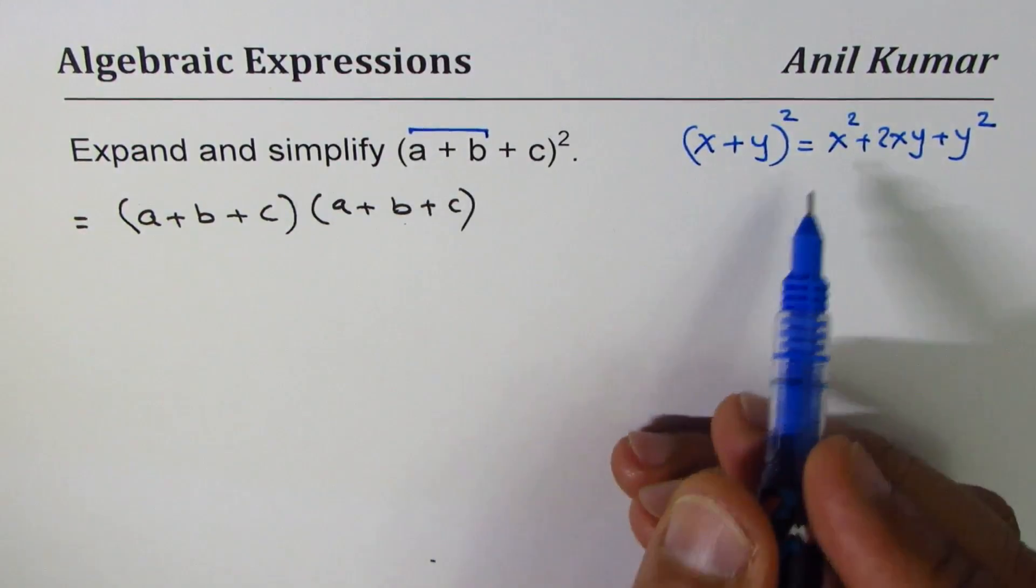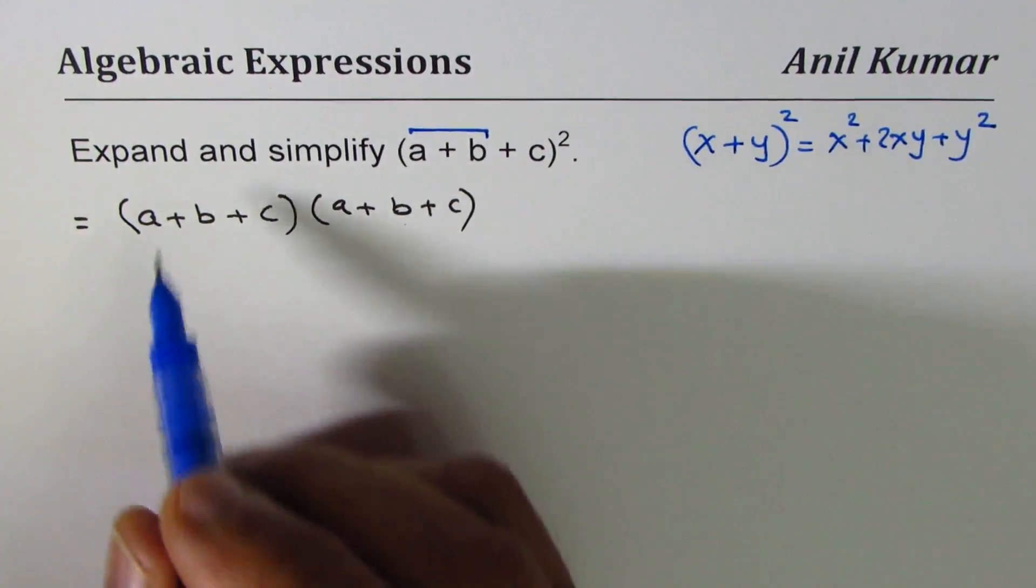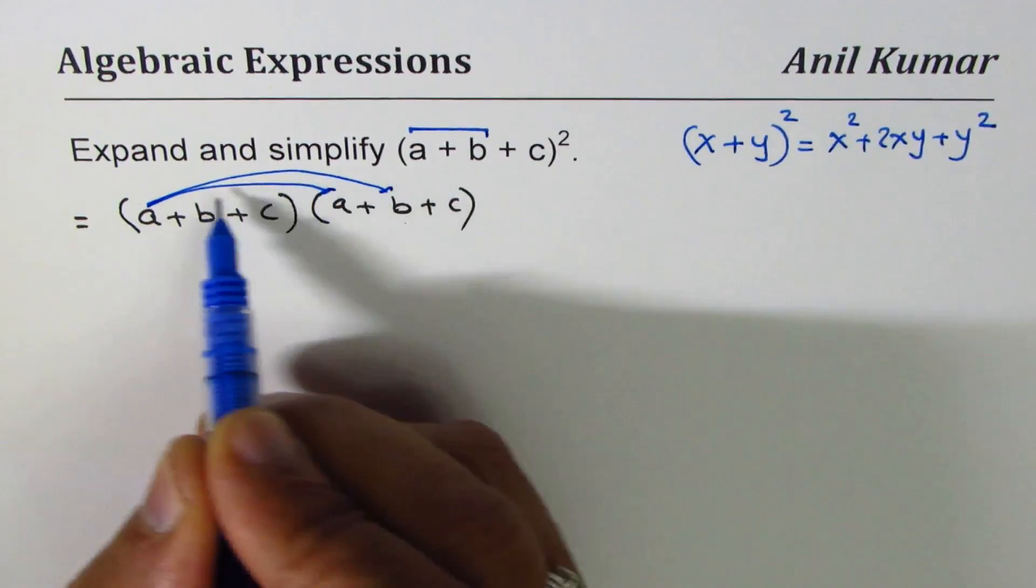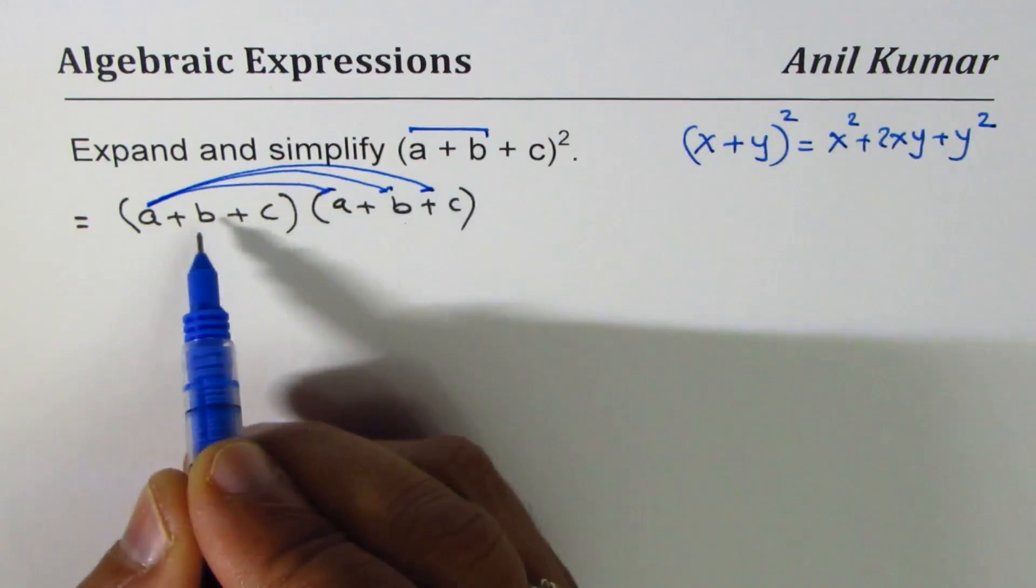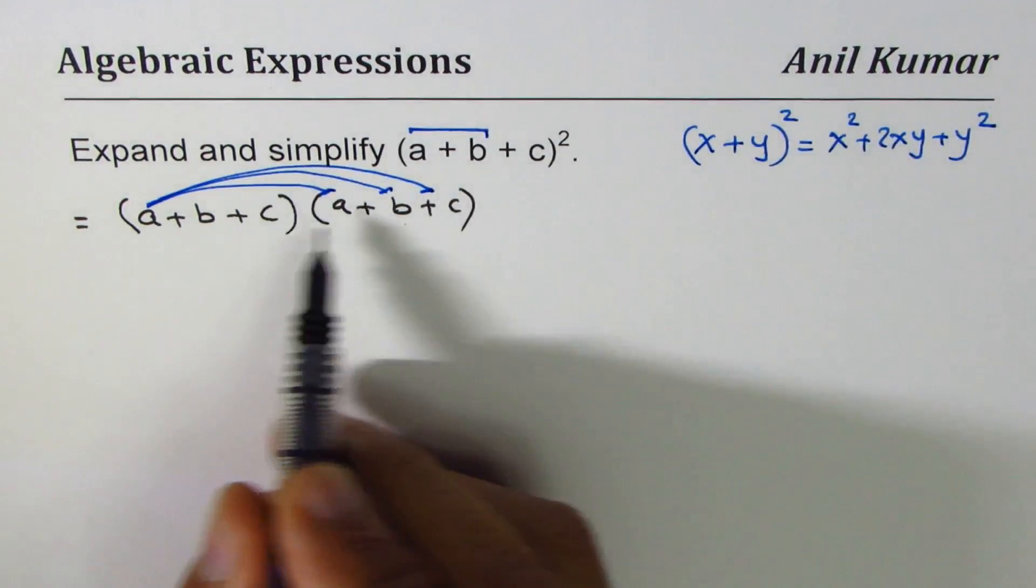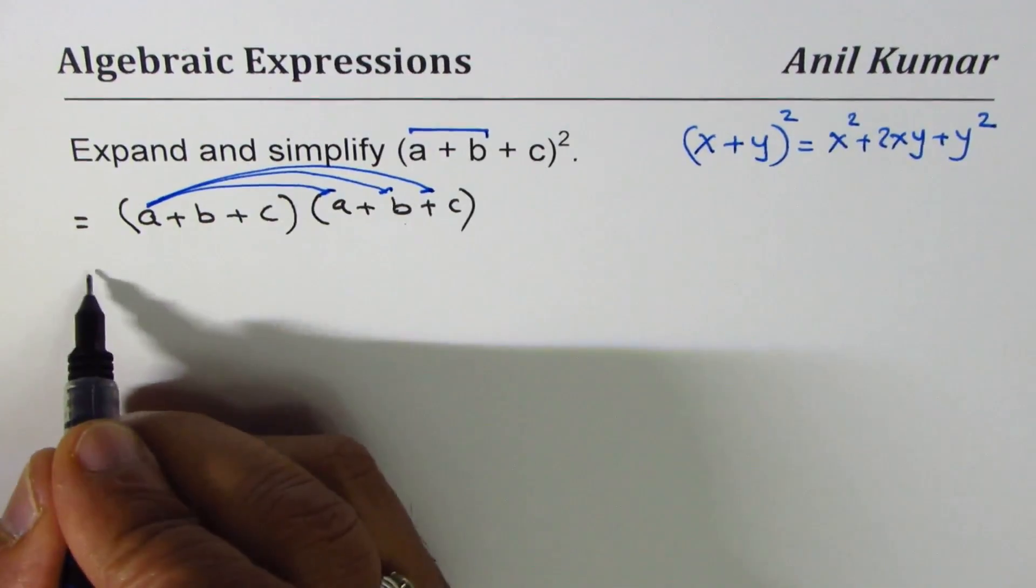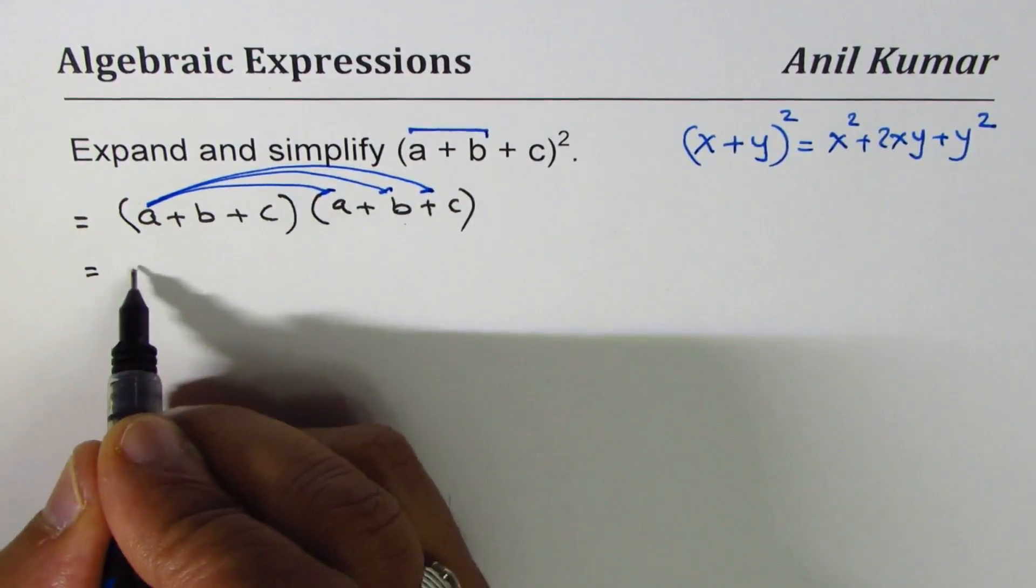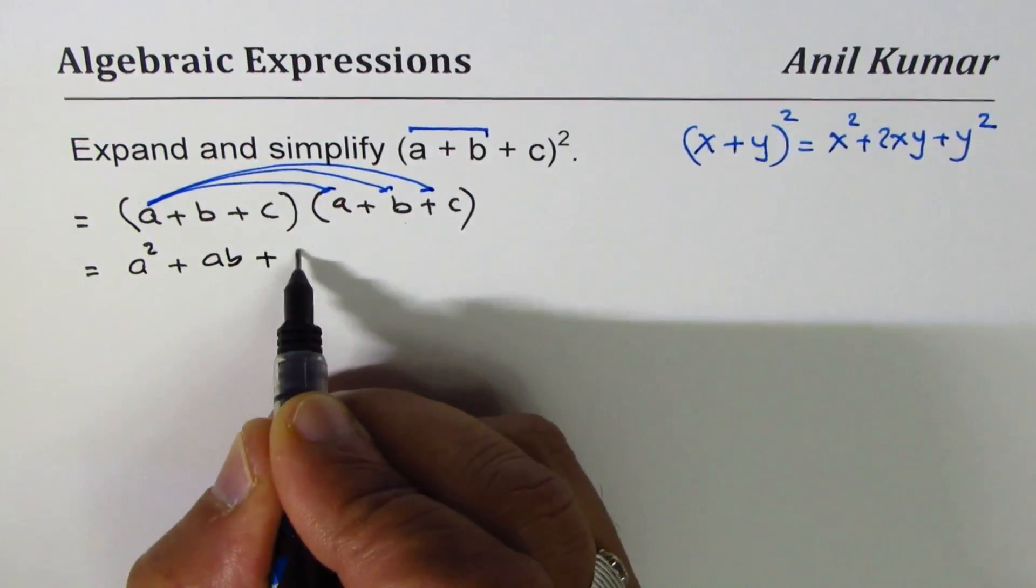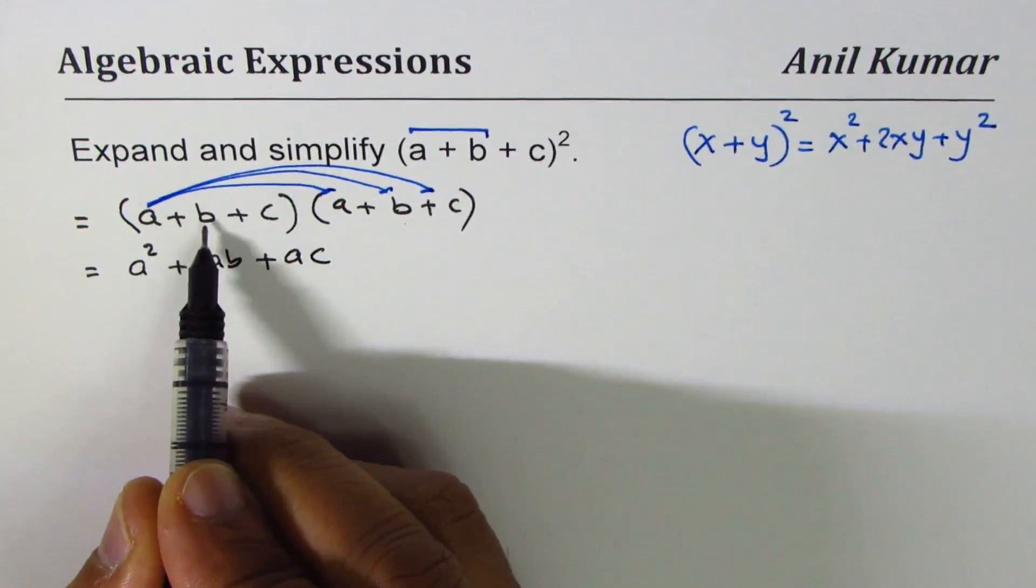So let me do both ways in this particular video. First we'll multiply with a all the three terms, and then with b and c. So how many terms will you get? We get 3, 3, and 3, that means 9 terms.